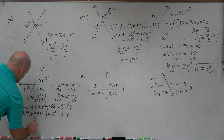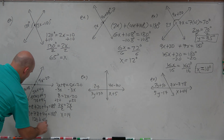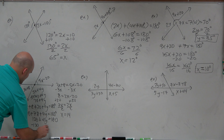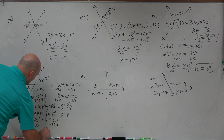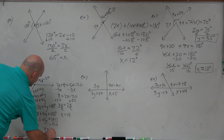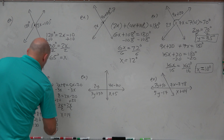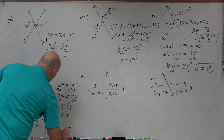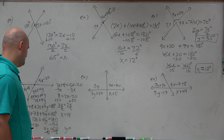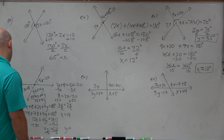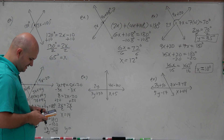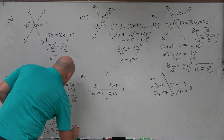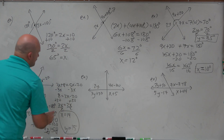So we have 120 plus 4y equals 180. Subtract 120 from both sides: 4y equals 60. Divide by 4: y equals 15. So x equals 14 and y equals 15.